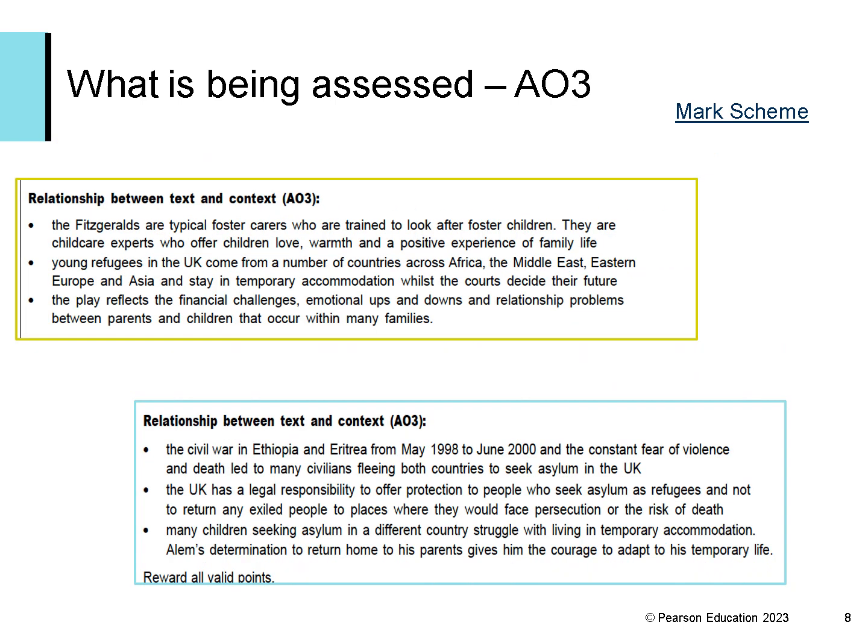Students are also assessed on how they discuss AO3 in their answers. AO3 is: Show understanding of the relationships between texts and the context in which they were written. Here you can see the indicative content for both question 17 and question 18 — these are just some ideas to show the ways in which student responses may demonstrate the relationship between text and context in relation to the two questions.